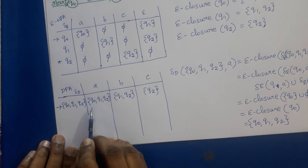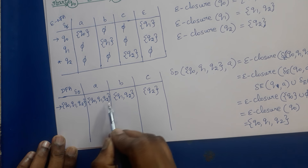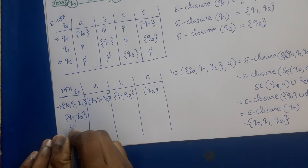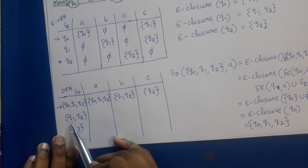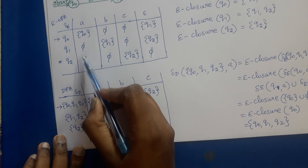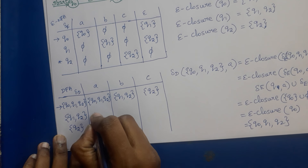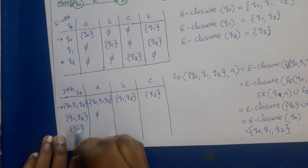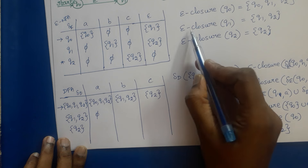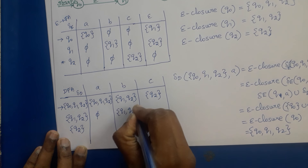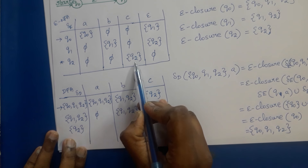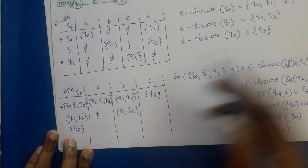The newly introduced states are {Q1, Q2} and {Q2}. For state {Q1, Q2} on A: delta_E(Q1, A) ∪ delta_E(Q2, A) is phi, and epsilon closure of phi is phi — that is the dead state. For {Q1, Q2} on B: Q1 ∪ phi = Q1, and epsilon closure of Q1 is {Q1, Q2}. For {Q1, Q2} on C: Q2 ∪ phi... wait, delta_E(Q1, C) ∪ delta_E(Q2, C) = Q2, and epsilon closure of Q2 is {Q2}.